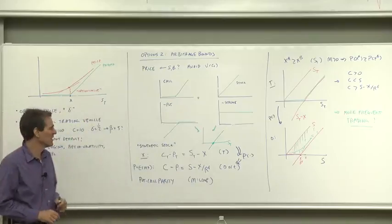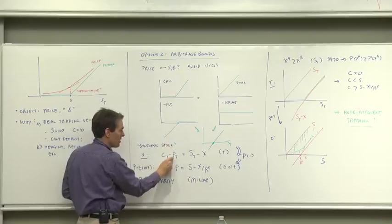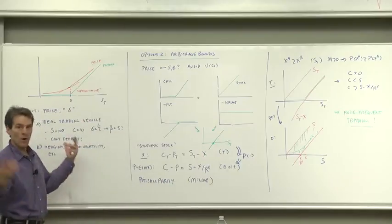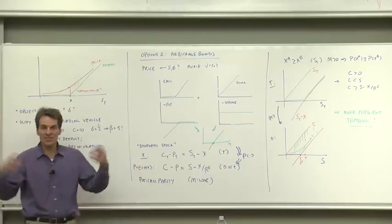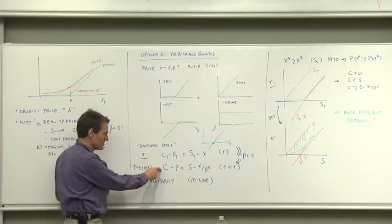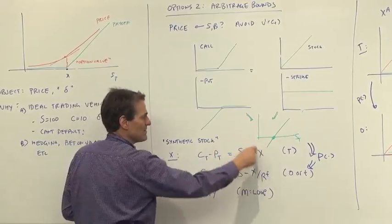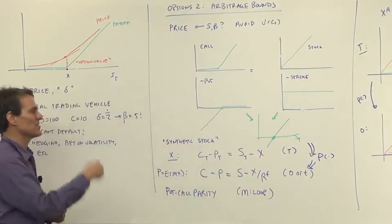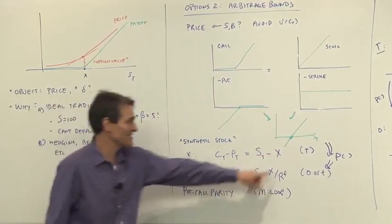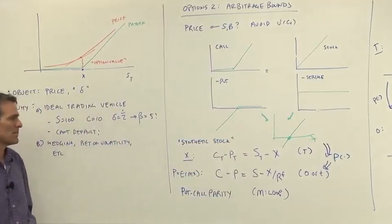Let's be careful in our thinking about what that means for prices. The call option payoff minus the put option payoff equals the stock payoff minus the strike price payoff. Now apply the pricing operator — apply E[m·x] to both sides of this equation. E[m · call payoff] is the call price. E[m · put payoff] is the put price. E[m · stock payoff] is the stock price. E[m · strike price] is the price of the promise to pay the strike in the future, which is strike over the risk-free rate — x over R_f — because we are taking prices moving from time T to today.